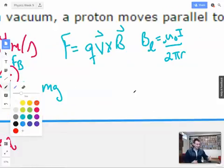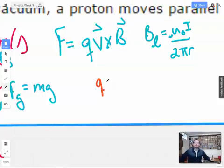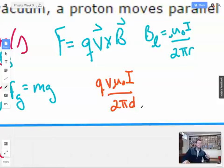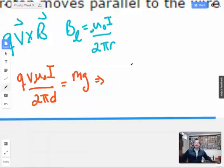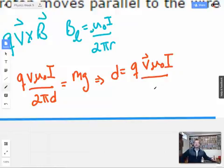All right, so now I'm going to write this all out and solve. Q, V. Nope, not going to do B. I'm going to do mu not i over 2 pi. Instead of r, I'm going to call it D. Yeah, because that's what they said in the problem. That's the distance. Mass times gravity. All right. And solving for D, we're going to have D equals Q. I'm going to put a little vector up there, I don't mean it as a vector, just so you don't get it confused with voltage. V mu not i over 2 pi mass gravity equals distance.